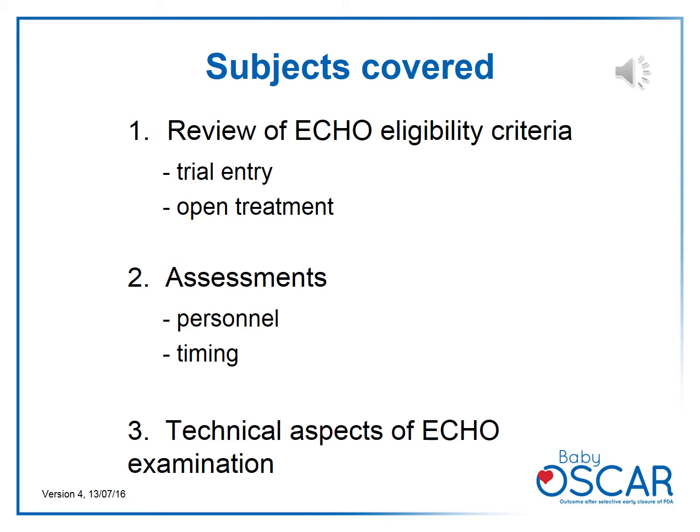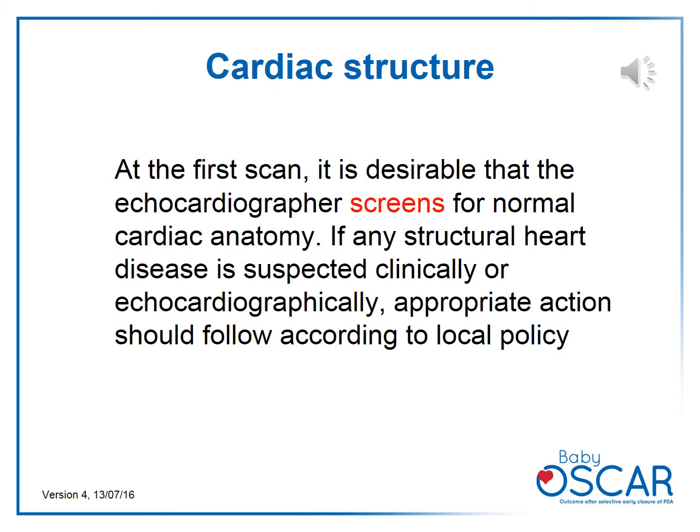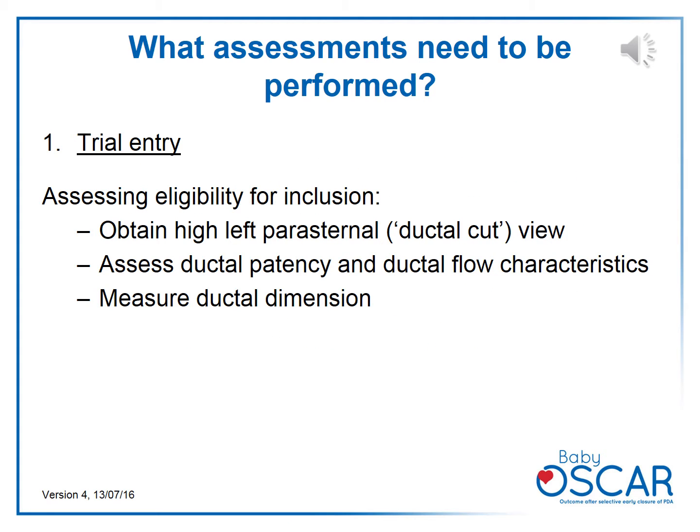We are going to review the echo eligibility criteria assessments for the Baby Oscar trial, including who can perform the scan, when the scan should be performed, and the technical aspects of echo examination. The first scan should establish the structural normality of the heart. If any structural heart disease is suspected clinically or echocardiographically, further opinion should be sought as per local practices or from the pediatric cardiologist. Having established structural normality of the heart, the scan to assess the child for eligibility for the Baby Oscar trial can proceed.